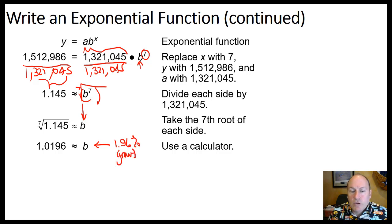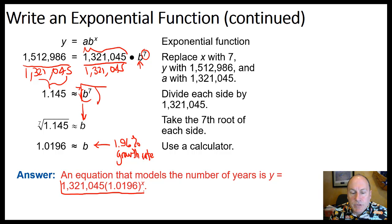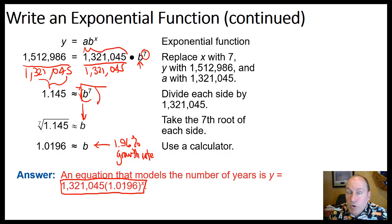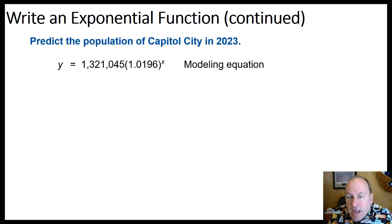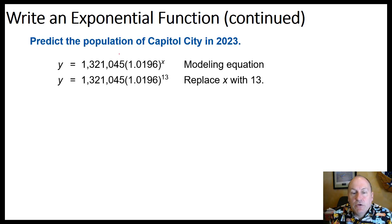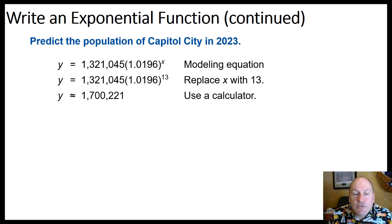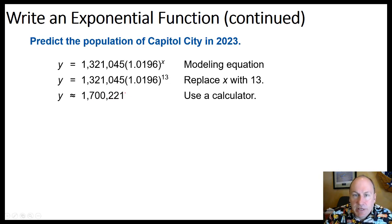That is the growth rate. So our model is: population equals 1,321,045 times 1.0196 to the x power. To predict Capital City's population in 2023, we substitute x equals 13, since 2023 is 13 years since 2010. Putting that into the model gives an estimated population of 1,700,221 in 2023.